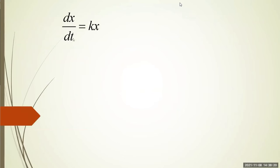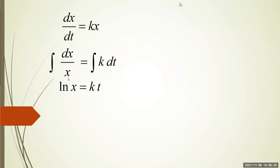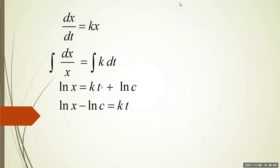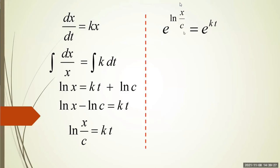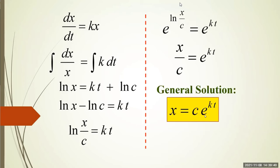So the x goes with the x, and k and t can go together. So dx over x is equal to k dt. Once you integrate both sides of the equation, you'll end up with ln x equal to kt, plus a constant. You can place the constant on either side — what they did here was combine the constants on one side. So ln of x minus ln of c can be rewritten as ln of x over c equals kt. Applying e to both sides, x over c equals e to the kt, giving the general solution.